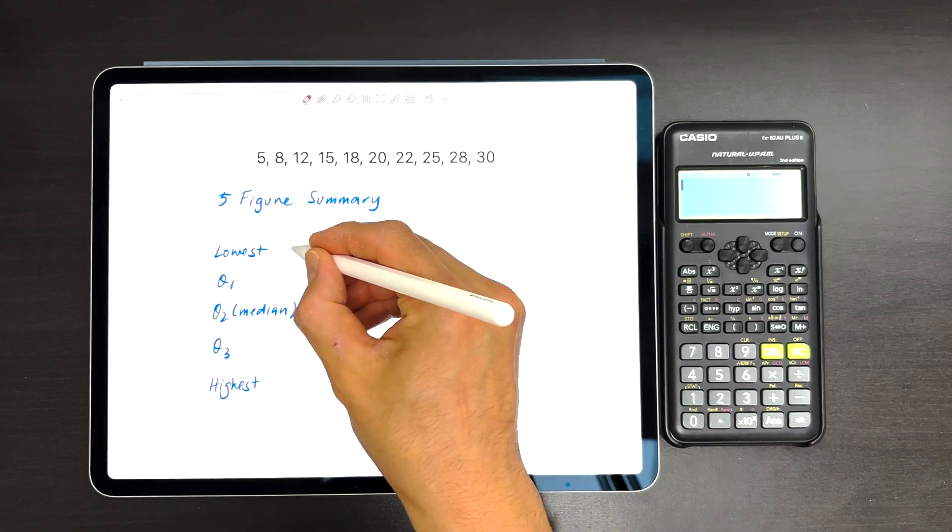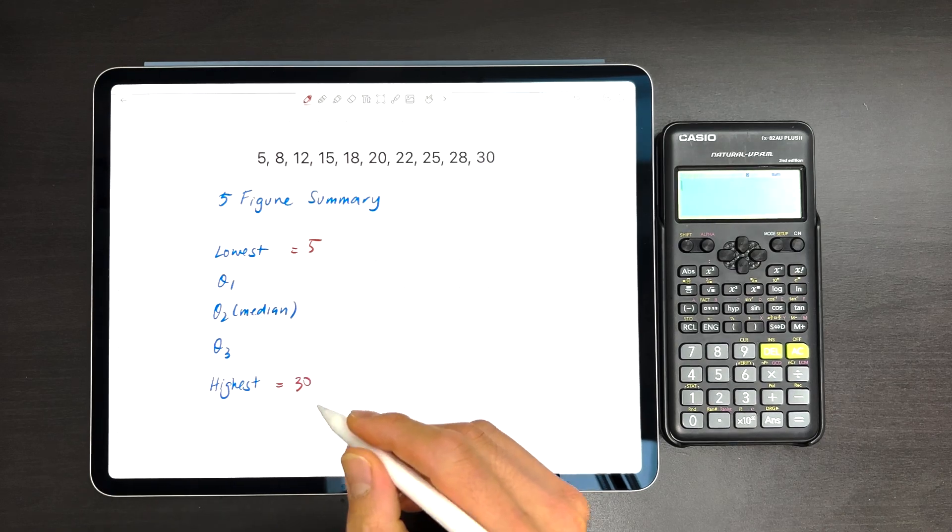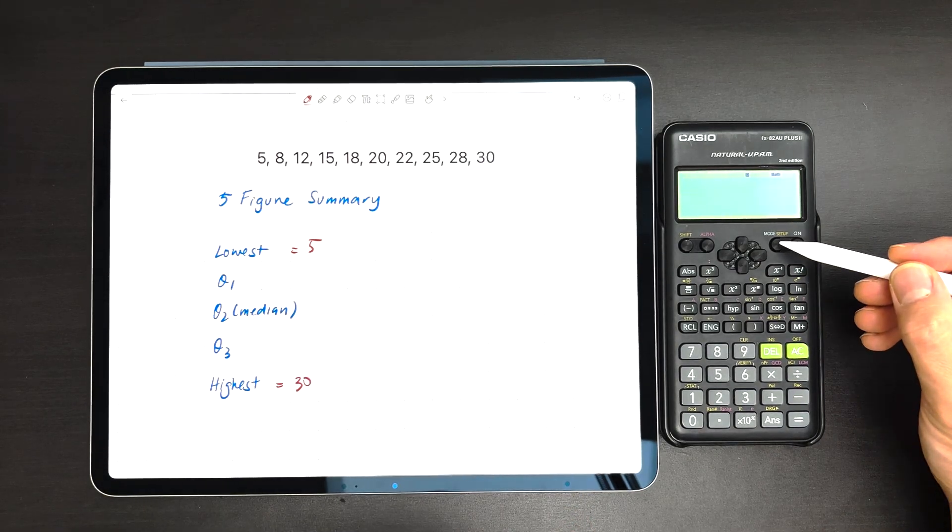The lowest and highest is pretty straightforward, so we don't have to spend too much time there—obviously 5 and 30. But for Q1, Q2, Q3, we're going to use the calculator to work it out.